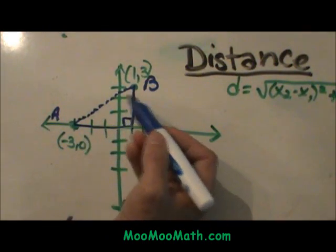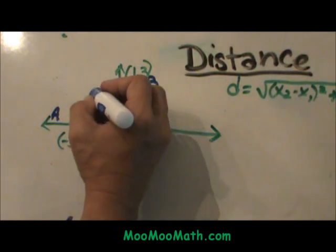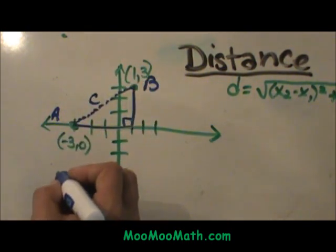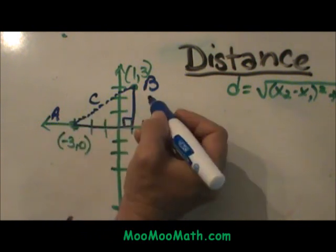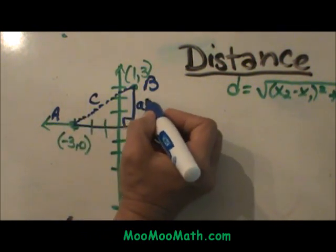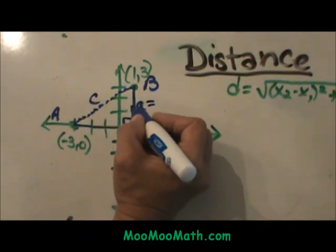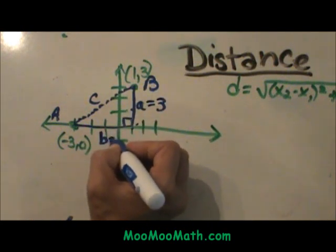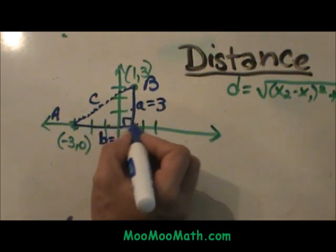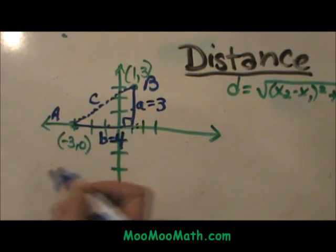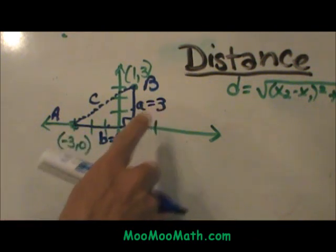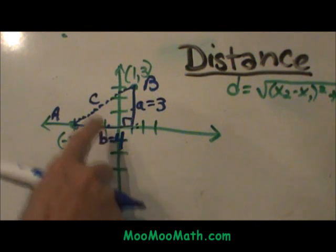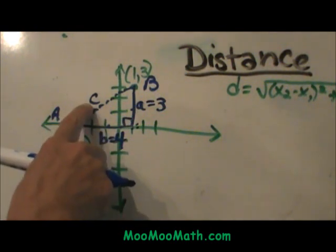Now you can see that AB is the hypotenuse or C of A squared plus B squared equals C squared. So little a on this side is three units long. Little b over here is four units long. So now I can take three and four plug it into the Pythagorean theorem and find C squared.